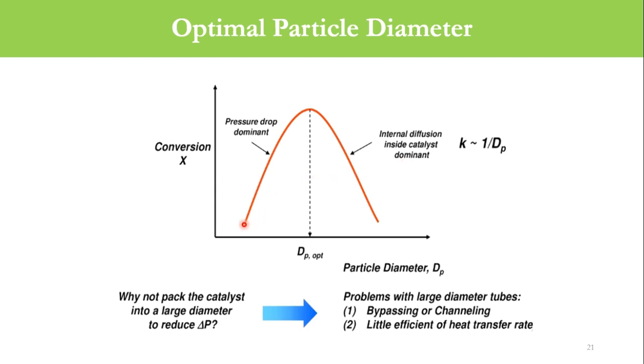At small particle diameter, the value of k is high or at its maximum, but obviously the pressure drop will be high. As you increase the particle diameter, the pressure drop starts to reduce.